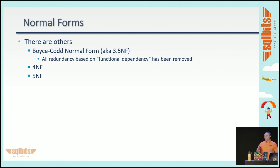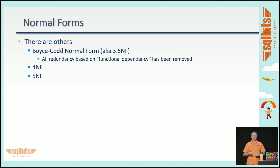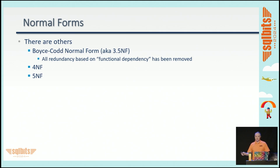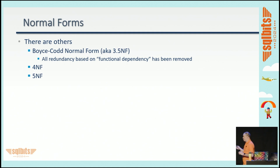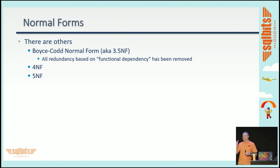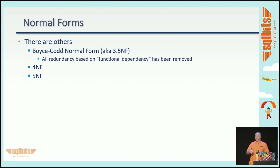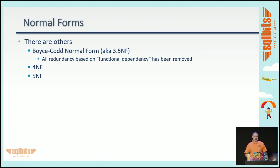There are other normal forms: Boyce-Codd, fourth, and fifth. But usually in the working world we don't deal with those — maybe if you're an academic. This can get very, very normalized across lots of tables requiring lots and lots of joins. I saw a system once where someone stored IP addresses with each octet in a different column. Now you're rebuilding data that takes more effort than it's worth.